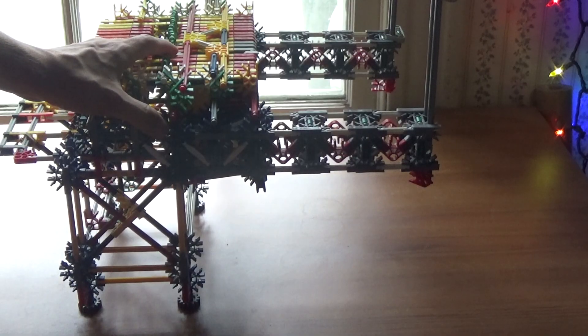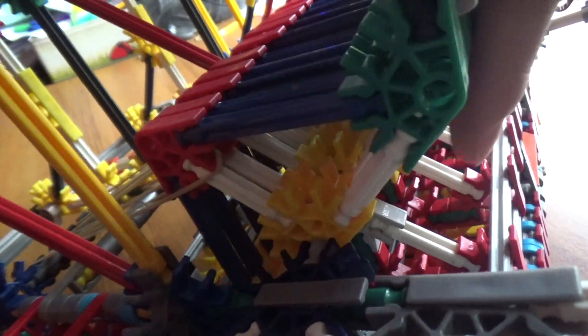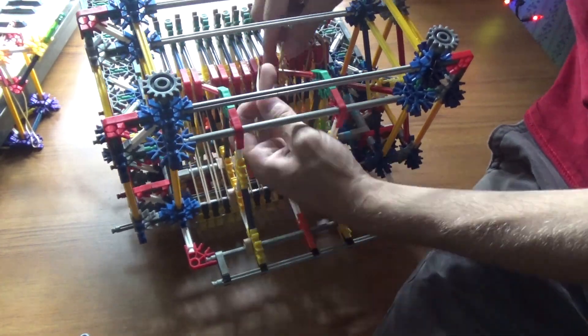Of course, the key pushers need a structure to hold them. They pivot on this axle in the heart of the structure, and the rubber bands that pull on them are attached to these Y-clip hooks.